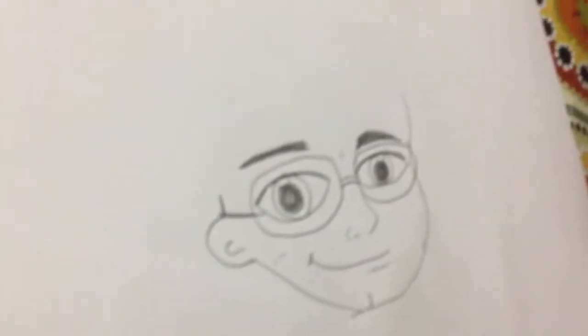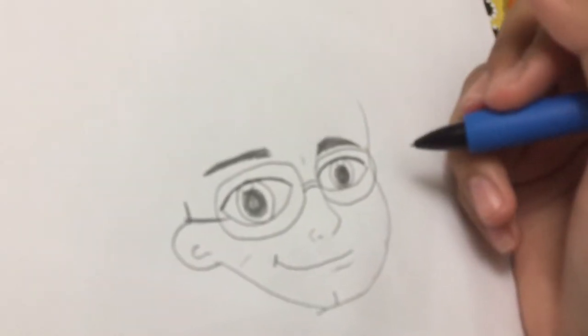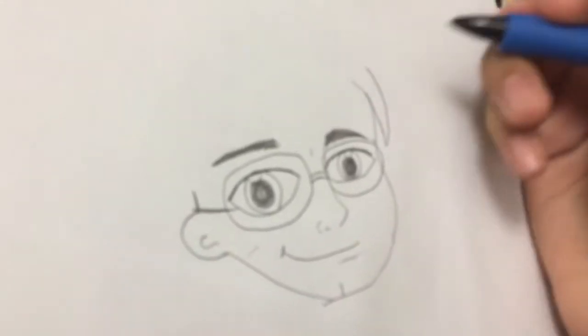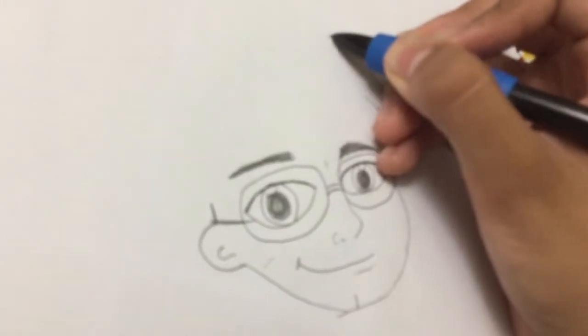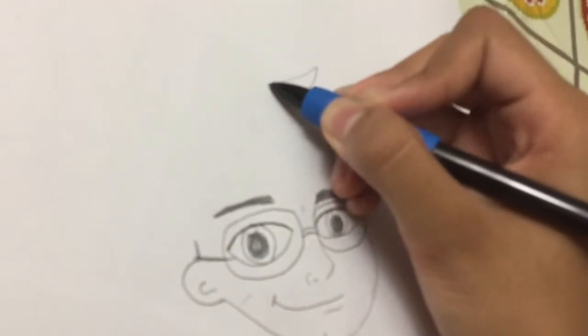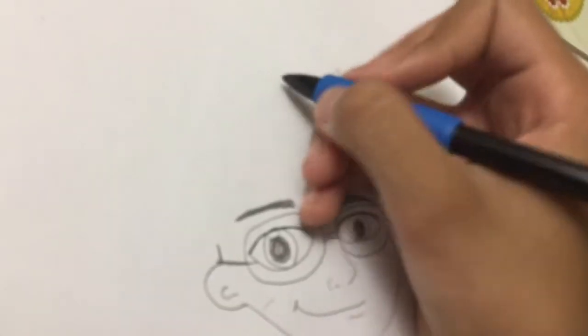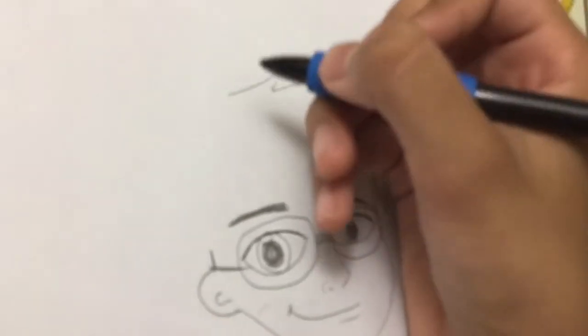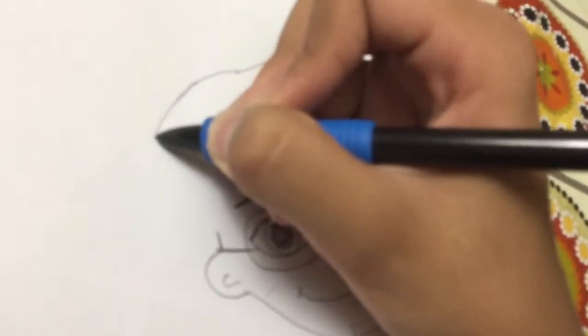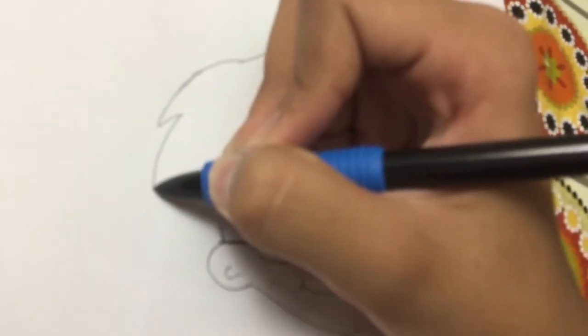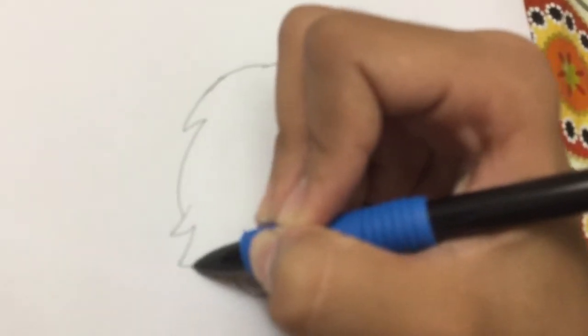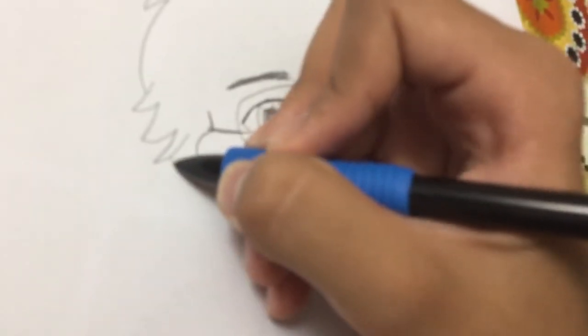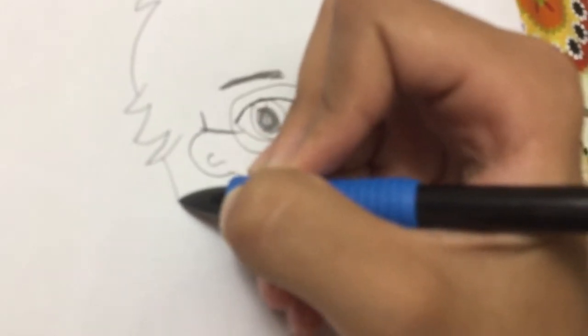So now let's make Harry Potter's hair. So I'm going to start off from here. Goes up. And his hair on the top. Just make these lines like this. Go up and down like this. And another line. And come back from the back. And draw a line like this.